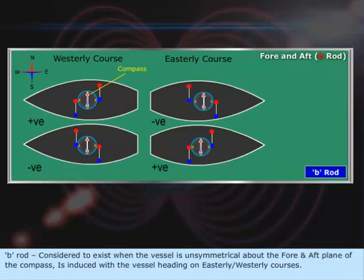B-Rod: Considered to exist when the vessel is unsymmetrical about the fore and aft plane of the compass. It is induced with the vessel heading on easterly-westerly courses.